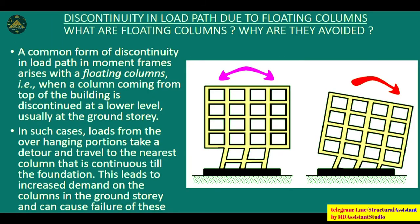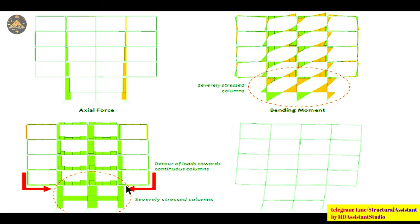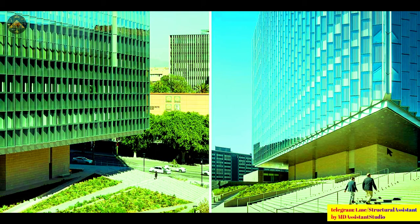Floating columns are avoided because they create discontinuity in the load path. A floating column does not start from the foundation — it begins somewhere in between. Load over the hanging portion must take a detour to reach the nearest column continuous to the foundation. This results in large bending moments and very large shear forces. Similarly, setback columns — where a column coming from the top of the building is moved away from its original line — also create load path discontinuity. When subjected to large axial forces, setback columns become vulnerable to combined axial-moment-shear failure.